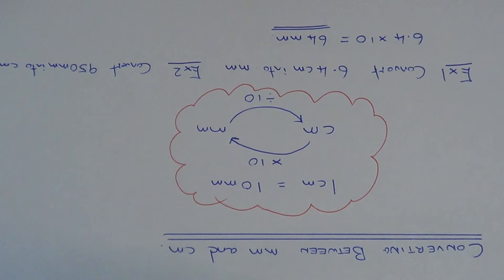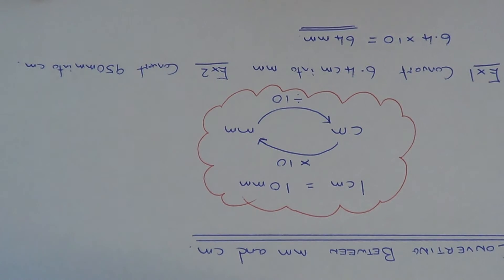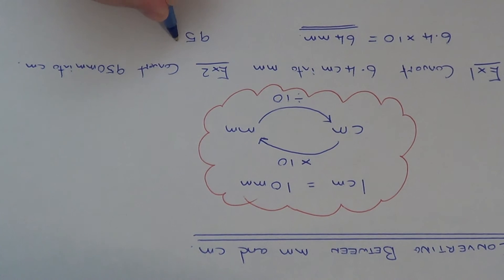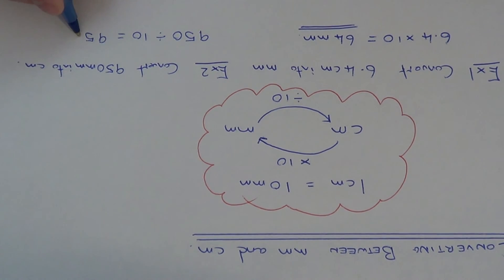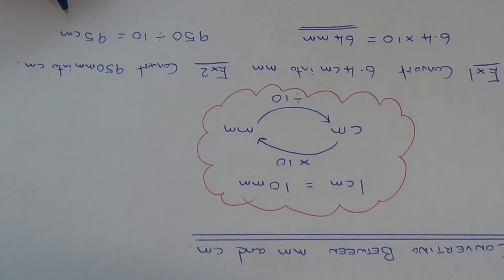Let's move on to example 2. We need to convert 950 millimeters back into centimeters. To convert millimeters into centimeters we need to divide the number by 10. So if we write 950 down first and we need to divide that by 10. 950 divided by 10 is 95 centimeters.